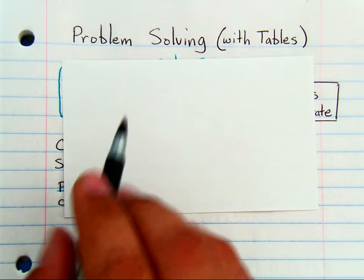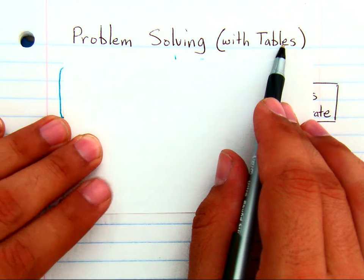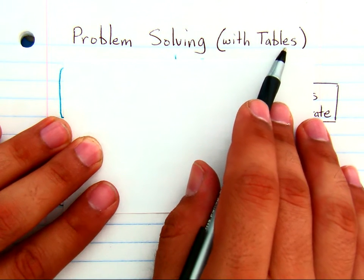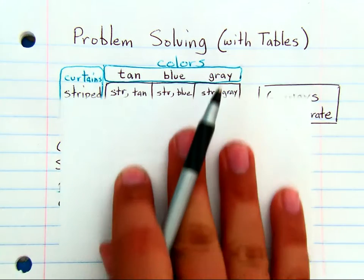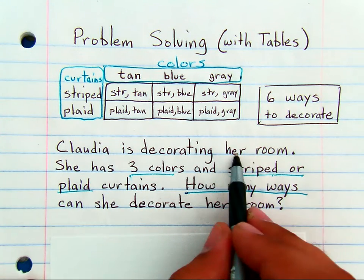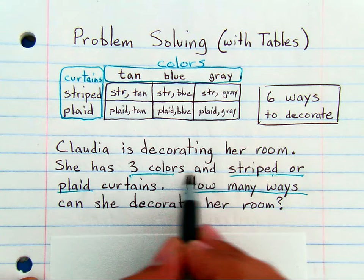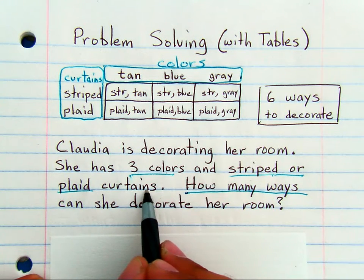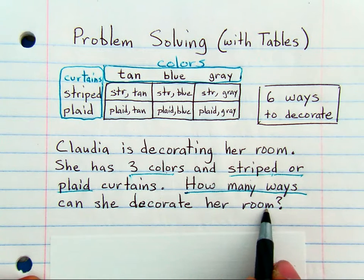Here's an example of problem solving with tables. Remember, when you see a table, it's okay to think of them like arrays in multiplication. If you have a problem like this that reads: Claudia is decorating her room. She has three colors and striped or plaid curtains. How many ways can she decorate her room?